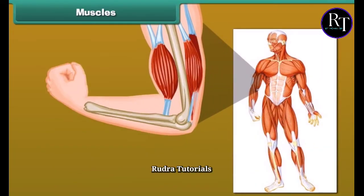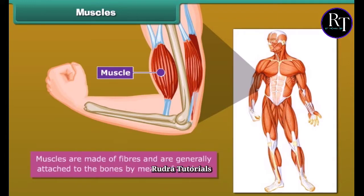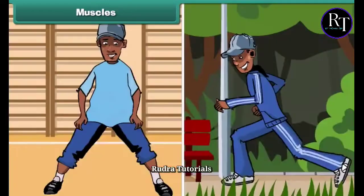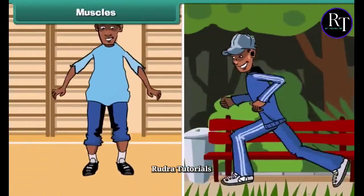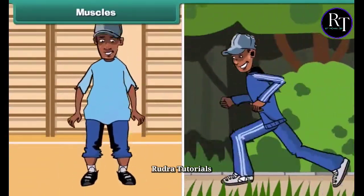Make a tight fist and bend your arm at the elbow. Feel your upper arm — it feels harder. This is called the biceps. The biceps are muscles. There are about 600 muscles present in an adult human body. Muscles are made of fibers and are generally attached to the bones by means of tendons. Muscles, along with bones, help to give shape to the body and also help the different parts of the body to make movements.